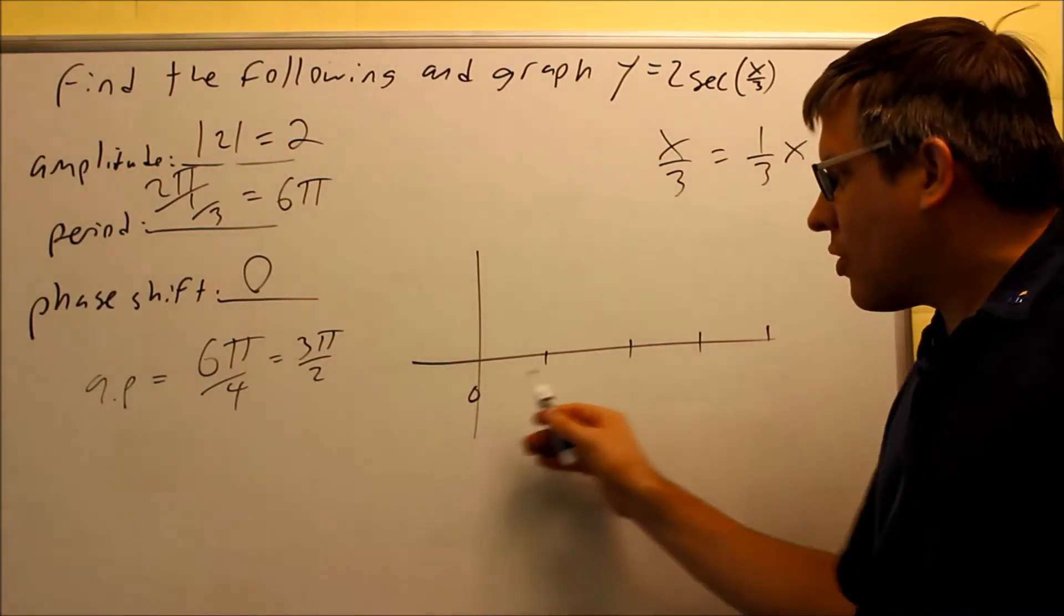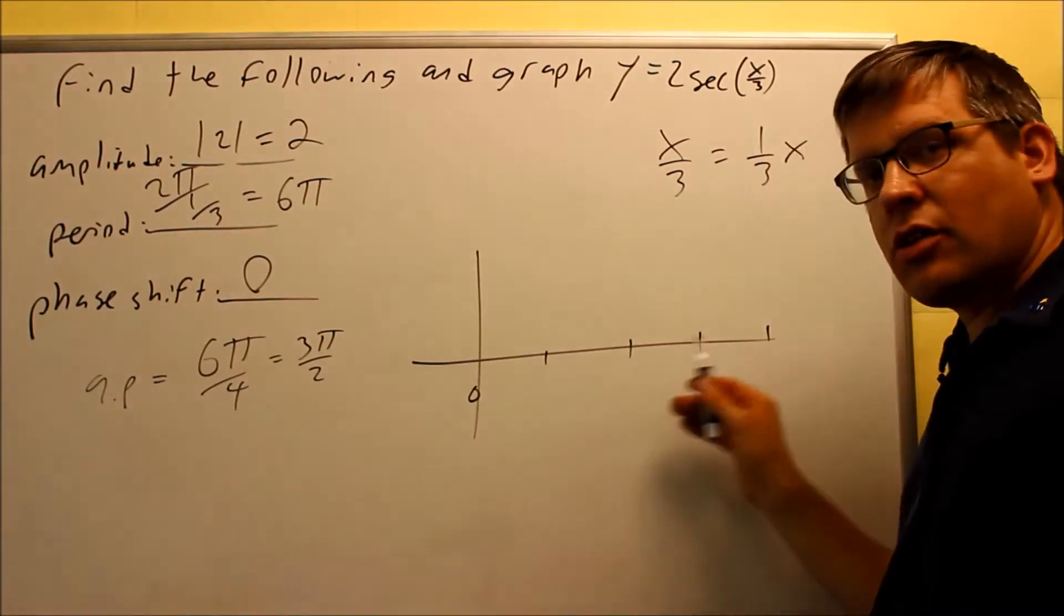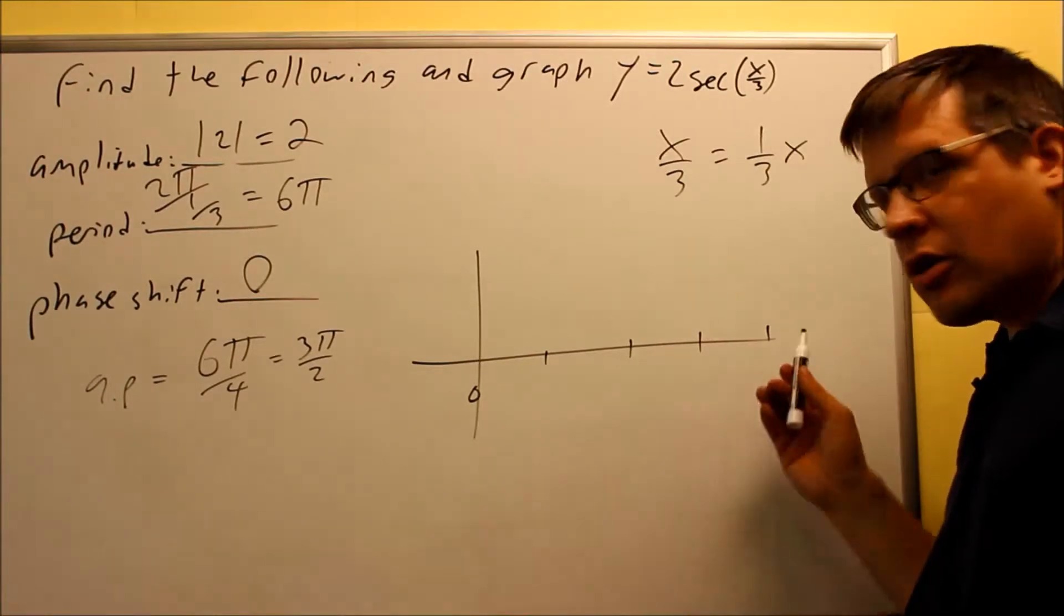So all you do is you just add 3 halves, add 3 halves again, add 3 halves π all the way across to get those.